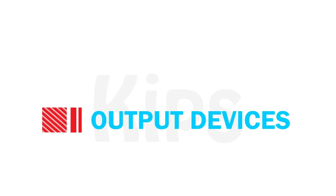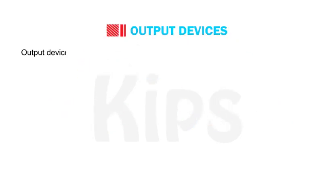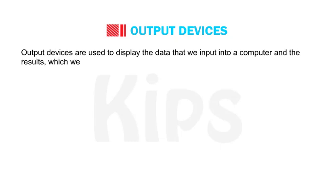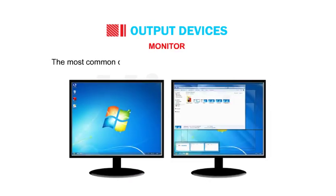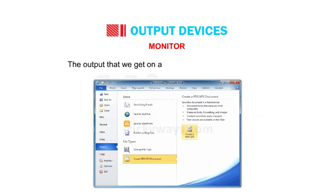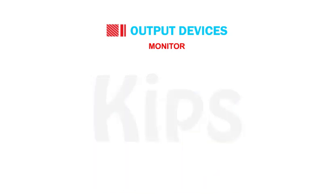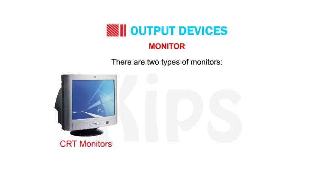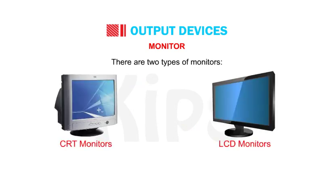Now let us talk about output devices. Output devices are used to display the data that we input into a computer and the results which we get after processing. Monitor is the most common output device. It looks like a television. The output that we get on a monitor is called the soft copy.